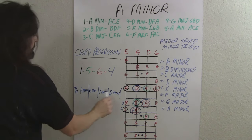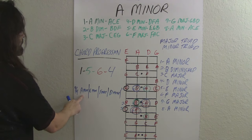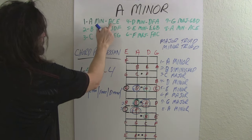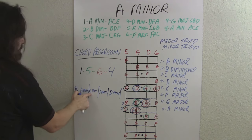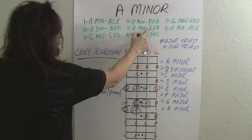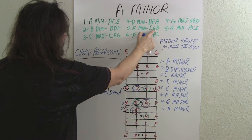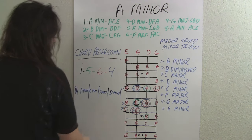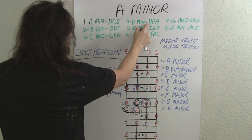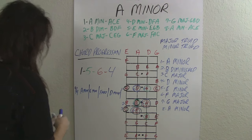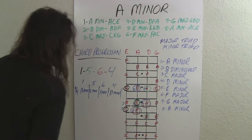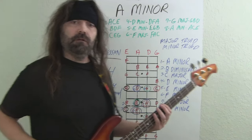We're going to play this 1-5-6-4 progression in four-four time. On A minor, play A, C, E, C. Then E minor: E, G, B, G. Then F major: F, A, C, A. Then D minor: D, F, A, F. So the one is A minor, the five is E minor, the six is F major, and the four is D minor. Let's play that right now — I'll play it once, then you play along with me.